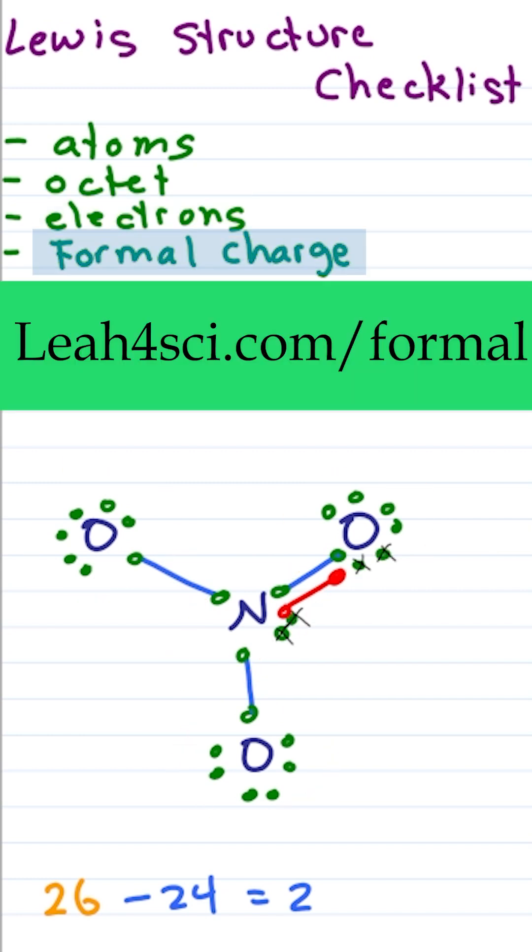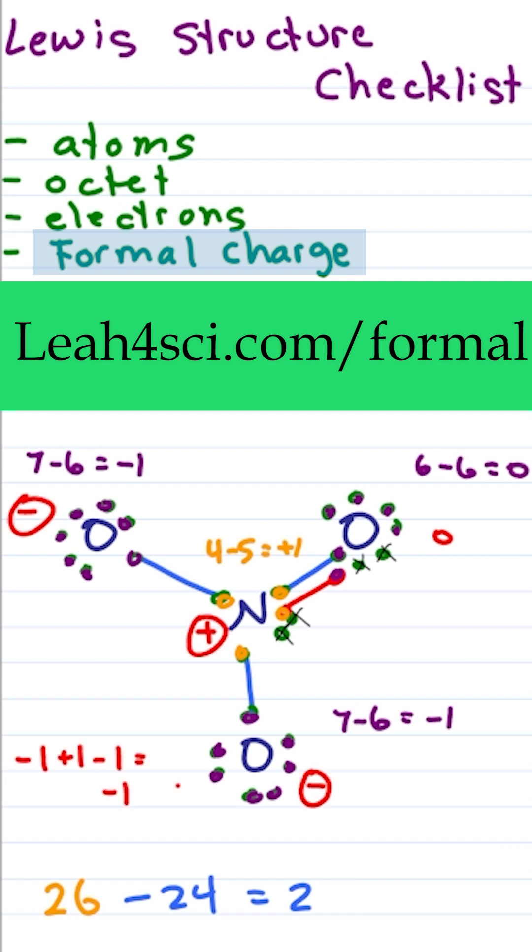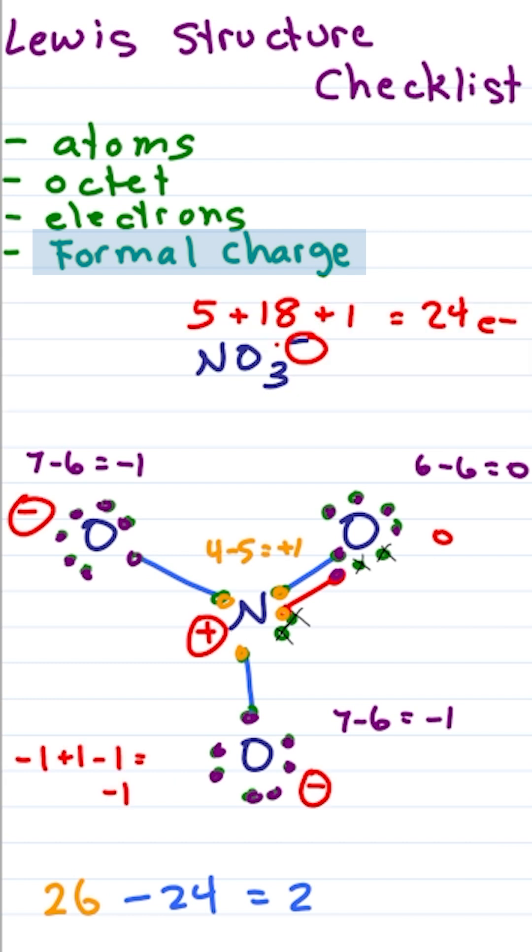Last, formal charge that I explain in detail here. 7 minus 6 is negative 1. 6 minus 6 is 0. 7 minus 6 is negative 1. 4 minus 5 is positive 1. For a net charge of negative 1, and we are good to go.